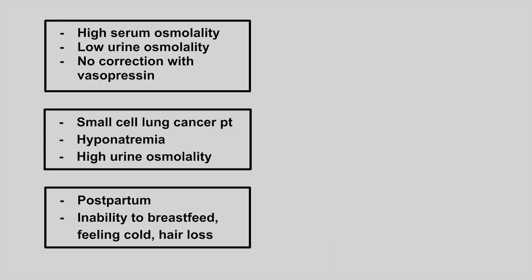The next patient has high serum osmolality, low urine osmolality, and no correction with vasopressin. This is nephrogenic diabetes insipidus.